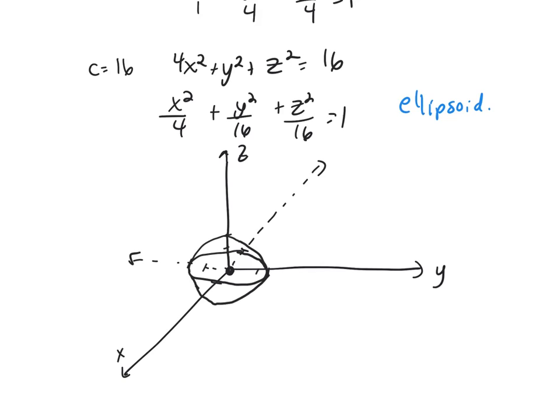And then the next one, I get another ellipsoid, but now it's spread out a little bit more. We go out a distance of 2 on x, and 4 on y, and 4 on z. So it's just scaled out twice the size.